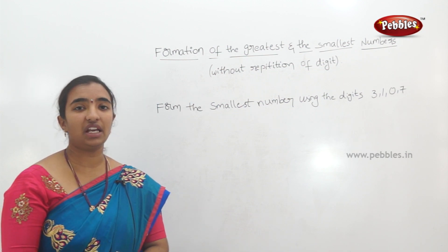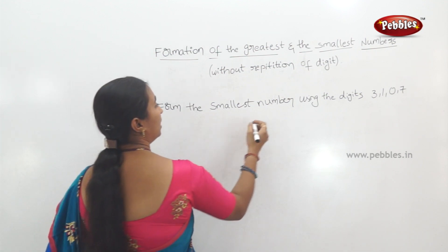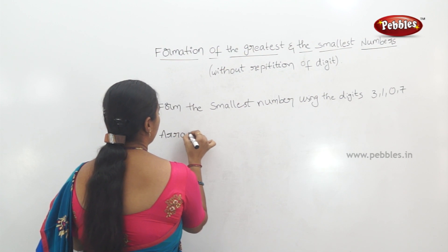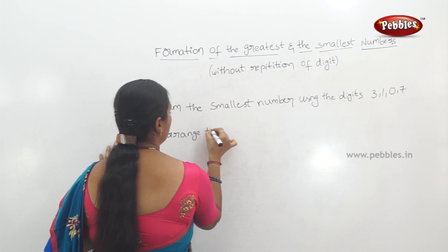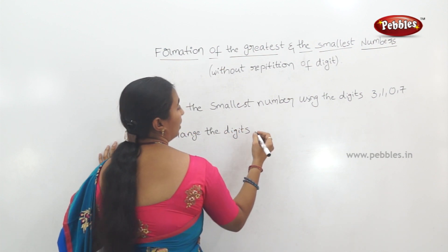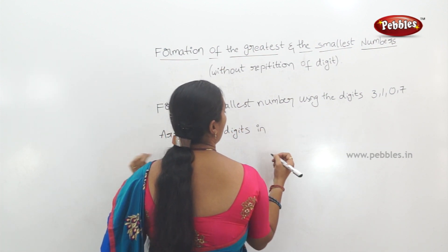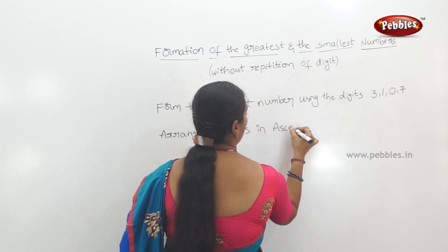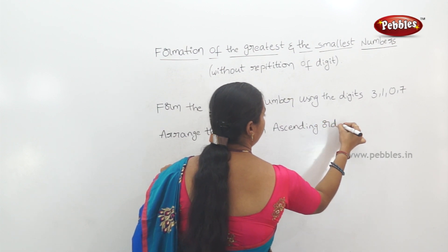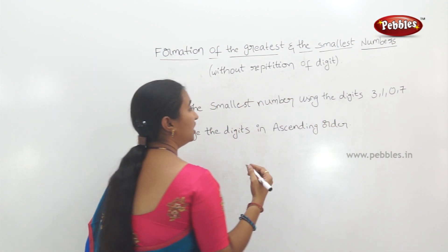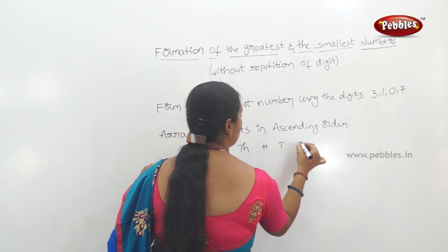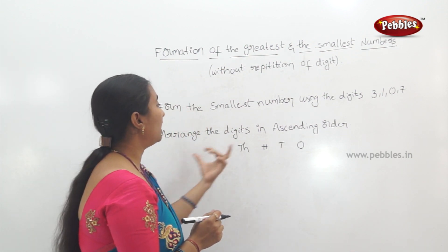Arrange the digits in ascending order. The place values are 1000s, 100s, 10s, and 1s. Write the digits in ascending order.